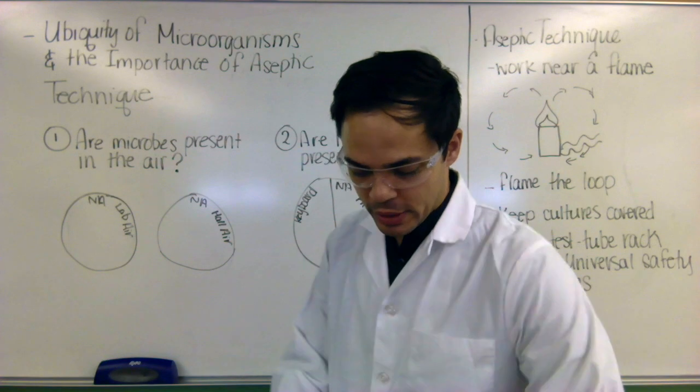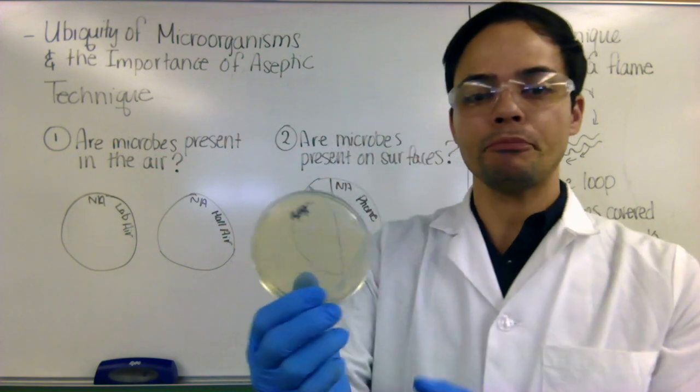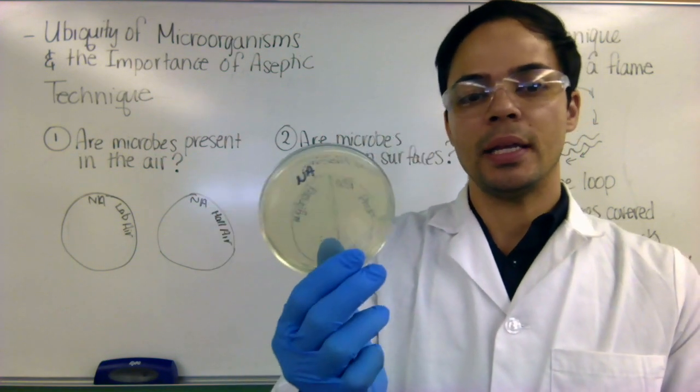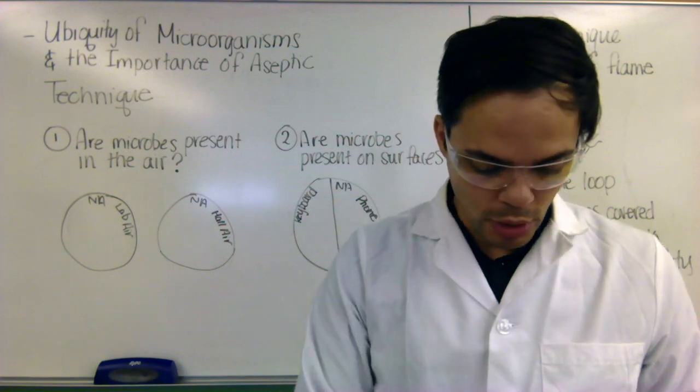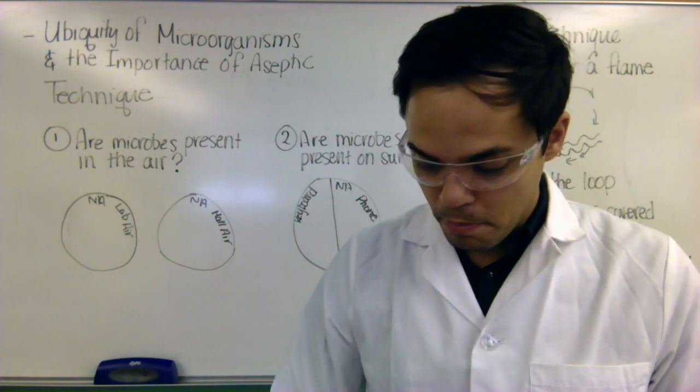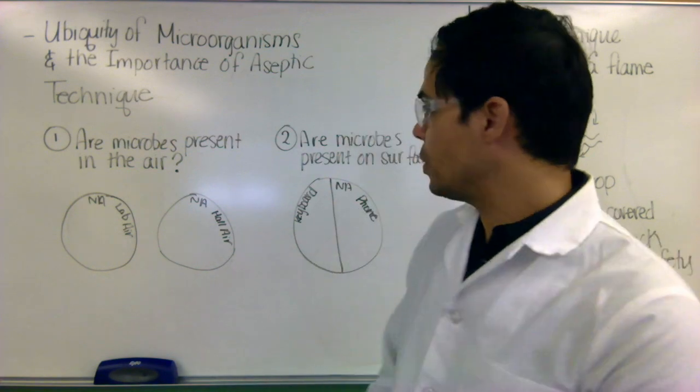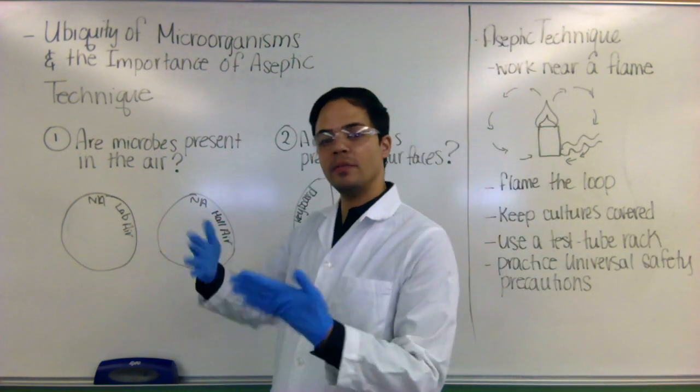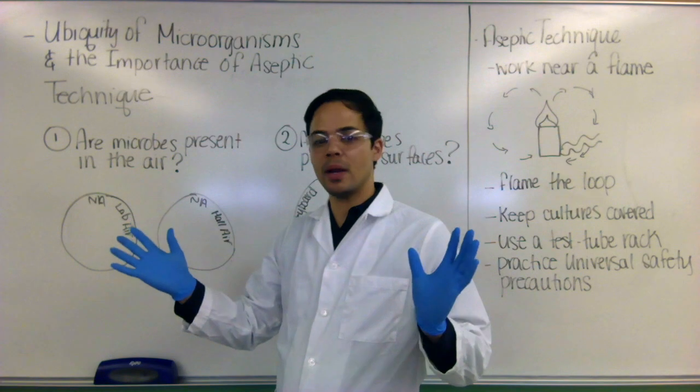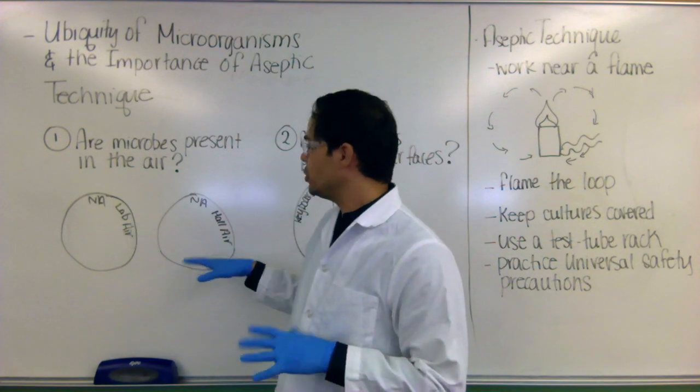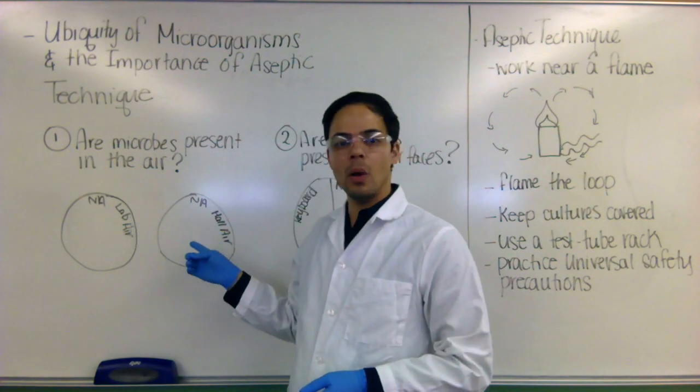So this, for example, is a nutrient agar plate, and it is designed to grow many different types of microbes. So it's a general growth medium. And what we're going to do is we're going to open one of those and expose it just to the lab air in this lab. And then we're going to open one and expose it to the hallway air.